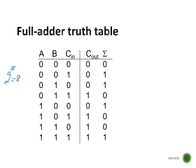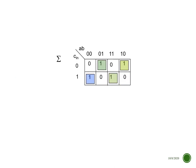Working through the truth table: zero plus zero plus zero is zero carry zero; zero plus zero plus one is one carry zero; one plus zero plus one is two, which is zero carry one; one plus one plus zero is two, which is zero carry one; and one plus one plus one is three, which is sum one carry one. Because of the complexity, we plug these into K-maps to minimize the equations.